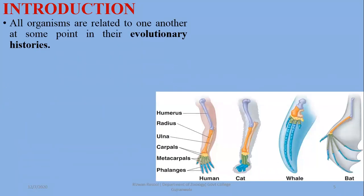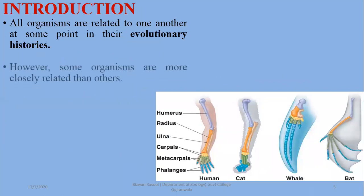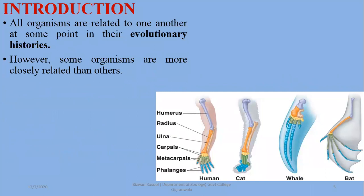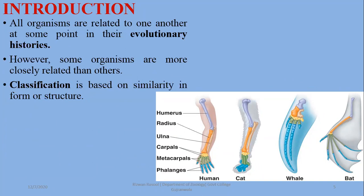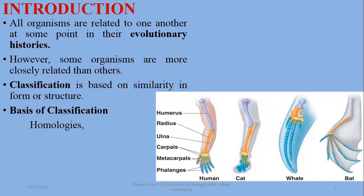All organisms are related to one another at some point in evolutionary history, and some are more closely related than others. So classification is based on similarity in form and structure. The common basis of classification — which may be asked as a short question — is homology.